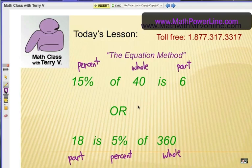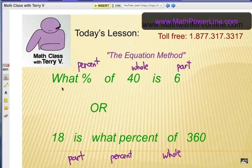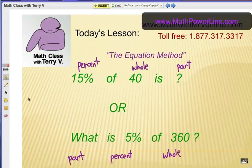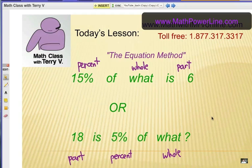So what you need to do is be able to recognize certain situations, and one of those things is unknown. Out of these three things, one is unknown in a percent problem. Sometimes the percent amount is gone. So what percent of 40 is 6? Or 18 is what percent of 360? The percent is missing. Or maybe the part is missing. 15% of 40 is what? Or what is 5% of 360? Or maybe the whole amount is being asked for. 15% of what is 6? Or 18 is 5% of what?